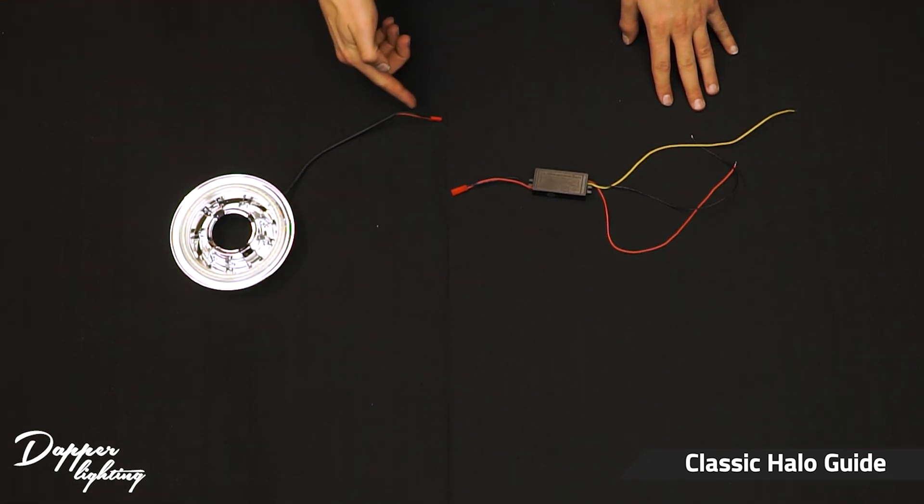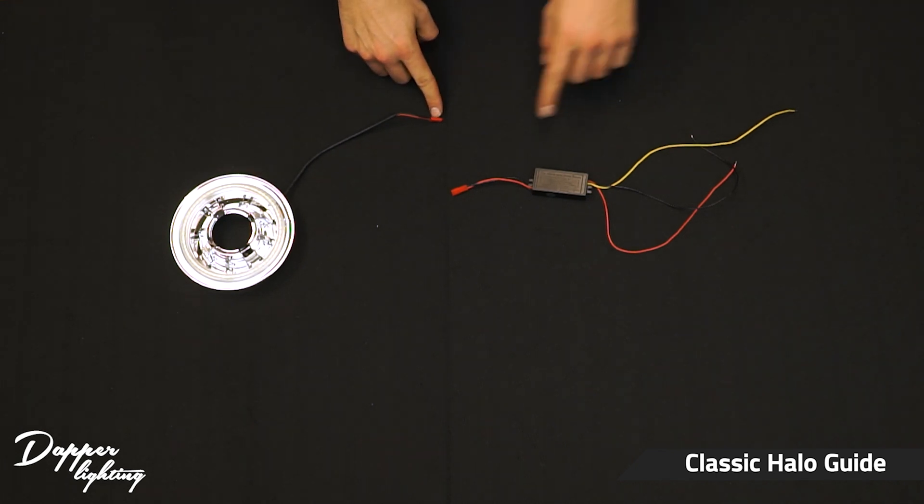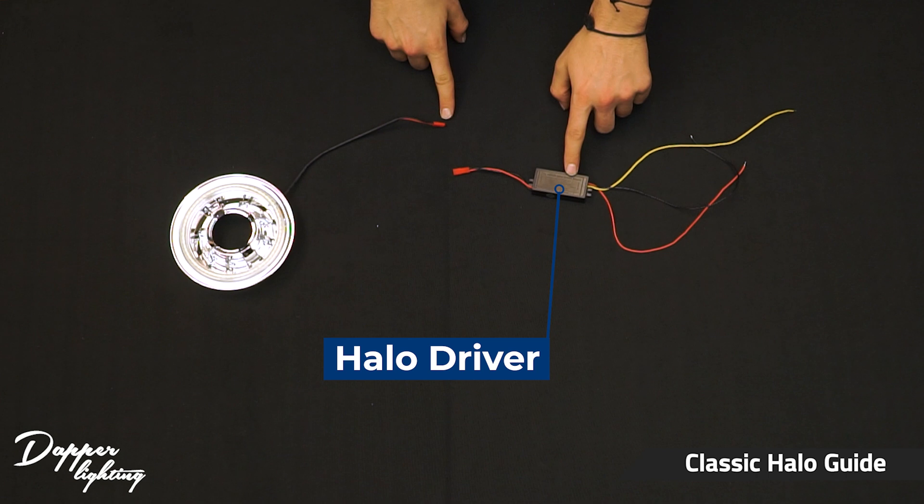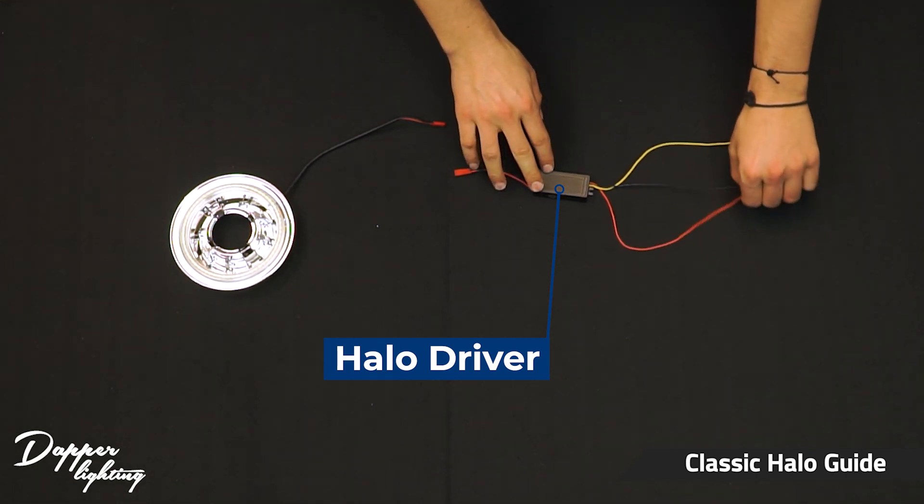So the first thing we have here is the classic halo. You can see the halo wiring coming out to a red connector which connects to the halo driver. The halo driver has three wires attached to it.